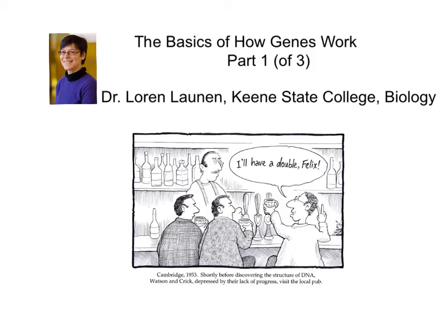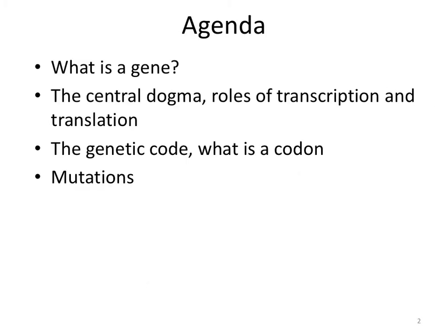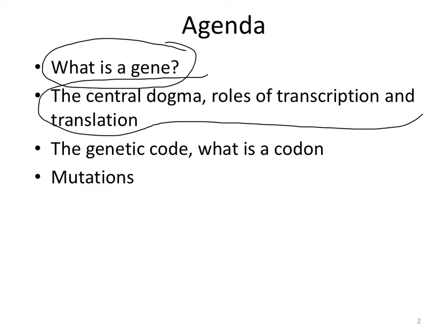This is part one of a three-part lecture on the basics of how genes work by Dr. Lauren Launin in the Department of Biology at Keene State College. We're going to talk about what a gene is, and then what is referred to as the central dogma, including the roles of two cellular processes known as transcription and translation.